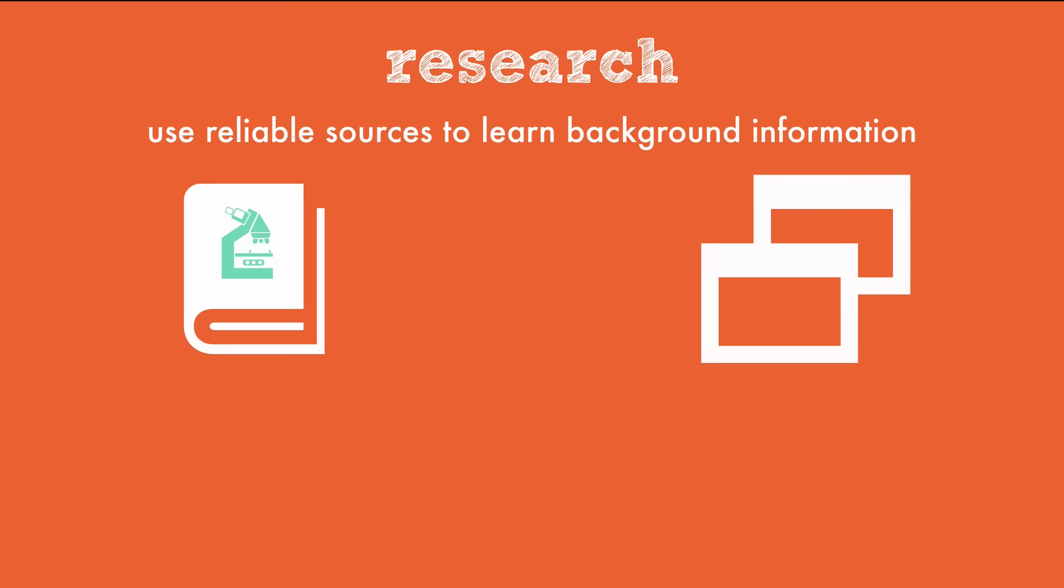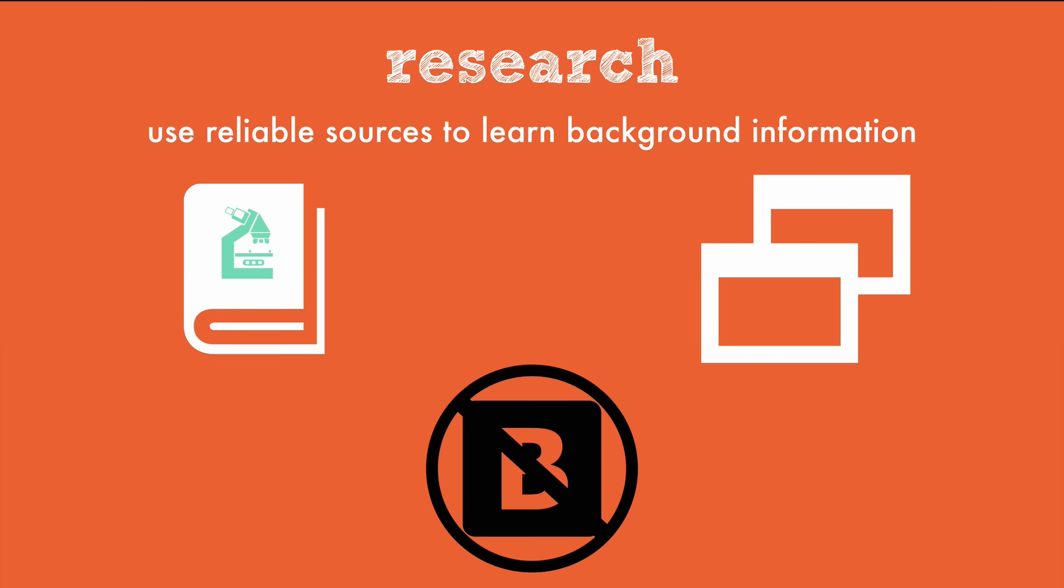Research is an important step in science because it may answer other questions you have and help refine your experiment before you go down a path that leads to nowhere or conduct an experiment that's already been done. Make sure you use reliable sources to learn background information. Scientific journals and online sources that are vetted and trusted are best. Avoid information from blogs and out-of-date textbooks, as the information might not be reliable.